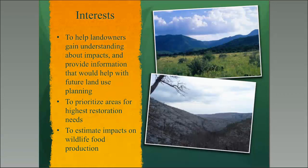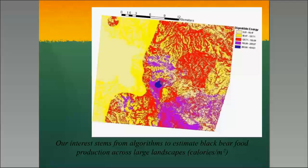We also wanted to use these same maps to estimate the impacts of wildlife food production. One of the models we're using for estimating food production across the landscape is actually a calorie map of my study area, where we calculate calories per square meter. What we wanted to do was overlay these burn severity maps on a model like this one to determine the number of calories being produced across the landscape and how many calories will be lost due to lack of production in different burn severity levels.